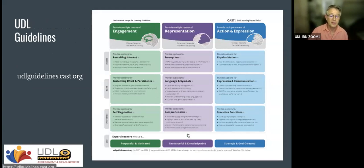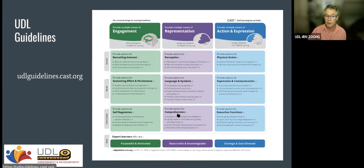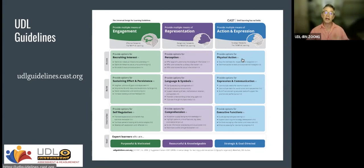We came up with this framework based on understanding neurodiversity and how we learn. We want flexibility in learning environments because of differences in our affective networks, which control engagement in learning. We want to accommodate differences in recognition networks by having multiple representations of information. And we address differences in strategic networks by providing flexibility in action and expression. The UDL guidelines are a familiar placemat — I recommend everybody print it out and laminate it.